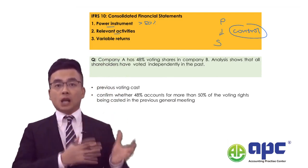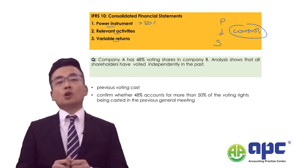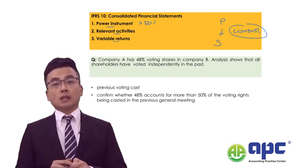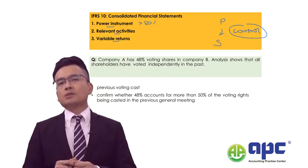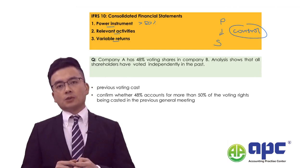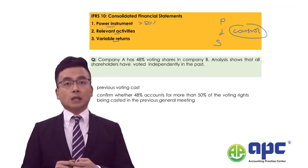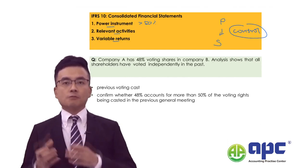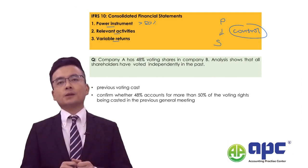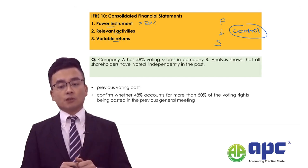You can direct relevant activities related to R&D and strategic matters, and you are able to obtain variable returns in the form of dividend, or perhaps when the entity goes bankrupt you can share all the remaining equity from that entity — that is variable returns. When all three criteria are met, you can demonstrate that you have control.